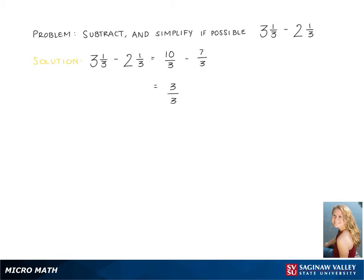This is going to become 3 over 3 which is really equal to 1. So we can say that 3 and 1 thirds minus 2 and 1 thirds equals 1.